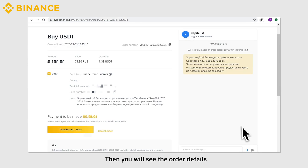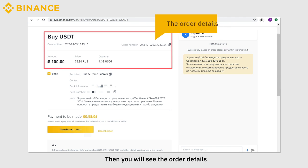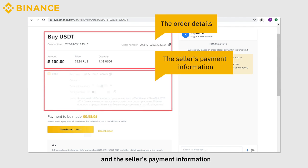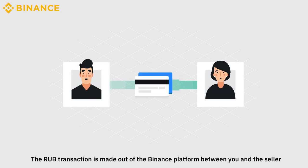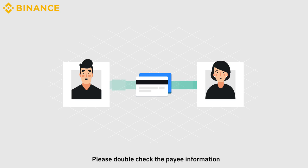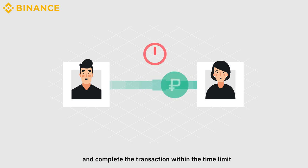You will see the order details and the seller's payment information. Copy the payee information to make payment as instructed. The RUB transaction is made outside the Binance platform between you and the seller. Please double-check the payee information and complete the transaction within the time limit.